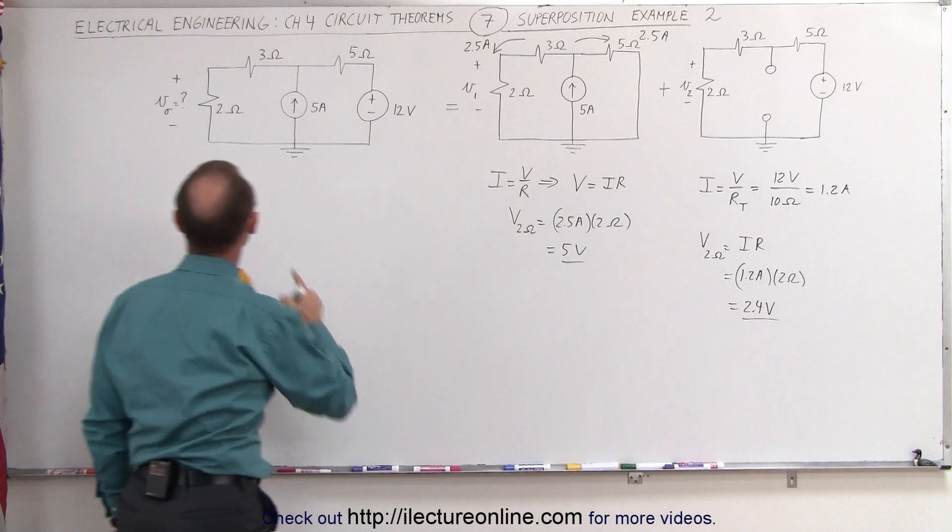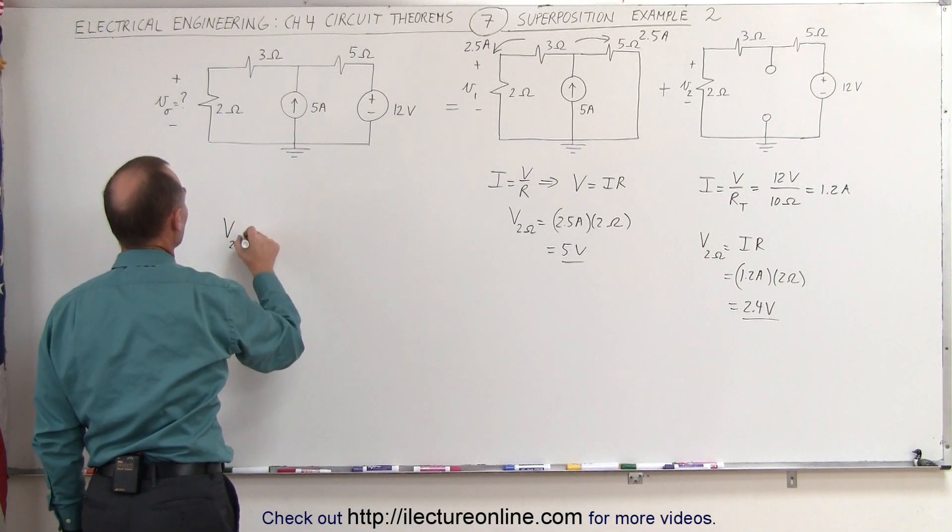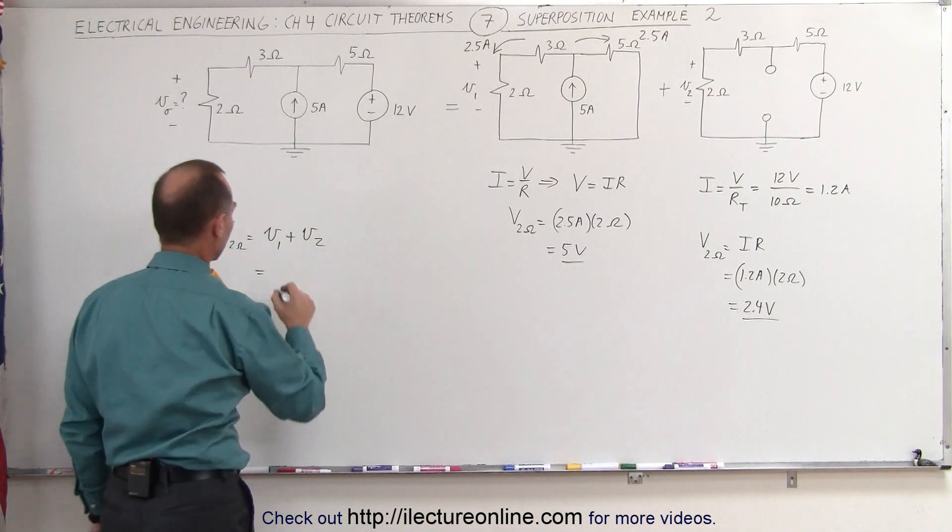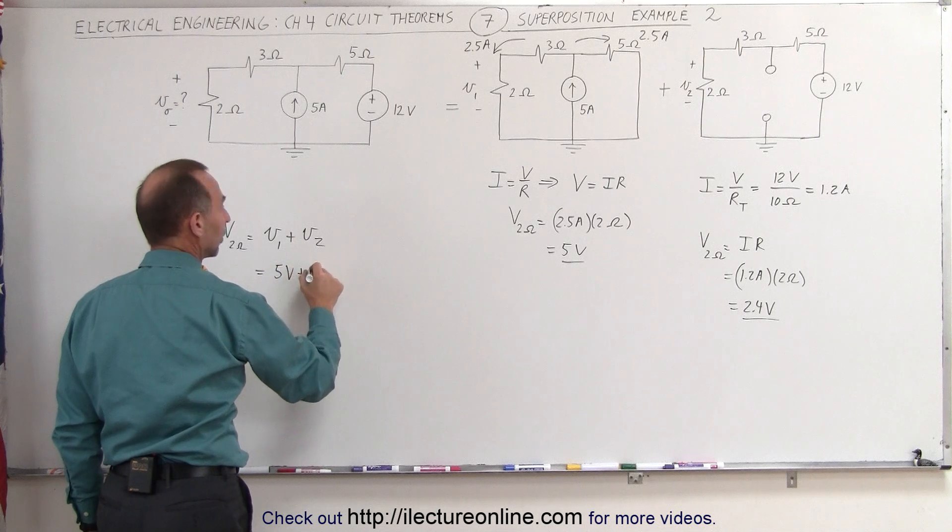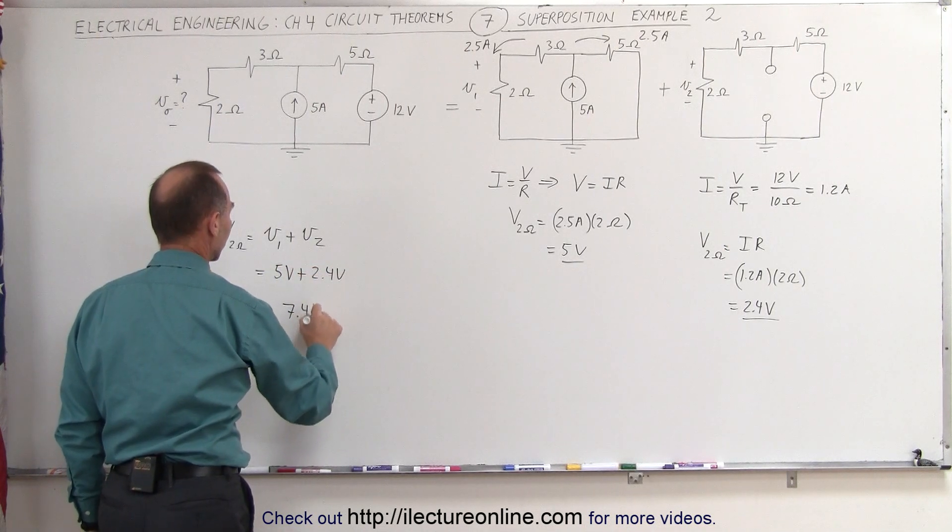Now we can see that the voltage across the 2 ohm resistor here, voltage across the 2 ohm resistor, is equal to V1 plus V2. We can simply add the two voltages together, 5 volts plus 2.4 volts is equal to 7.4 volts.